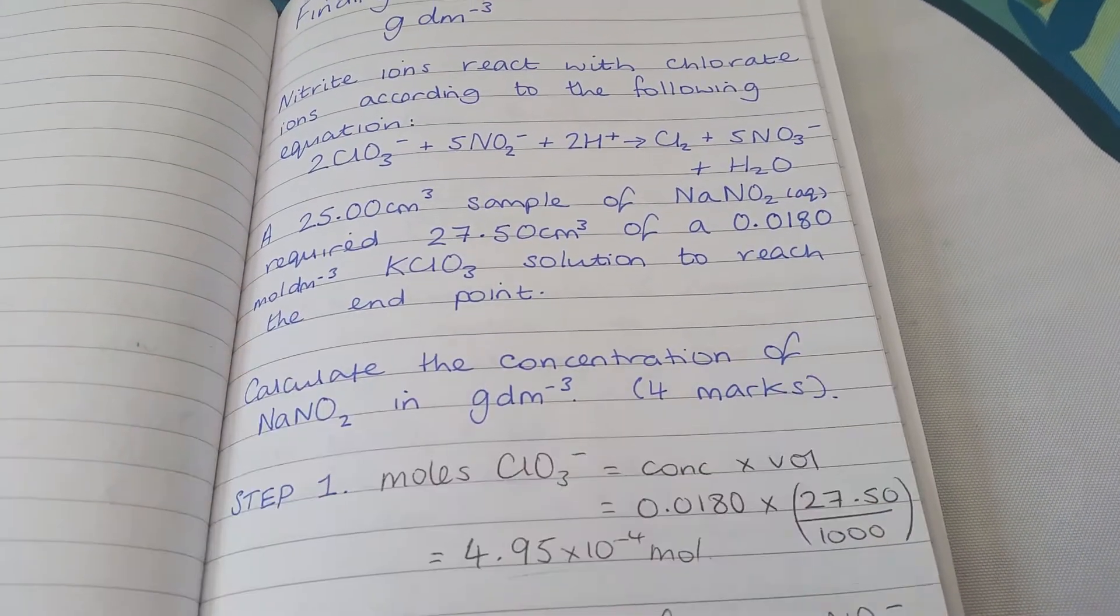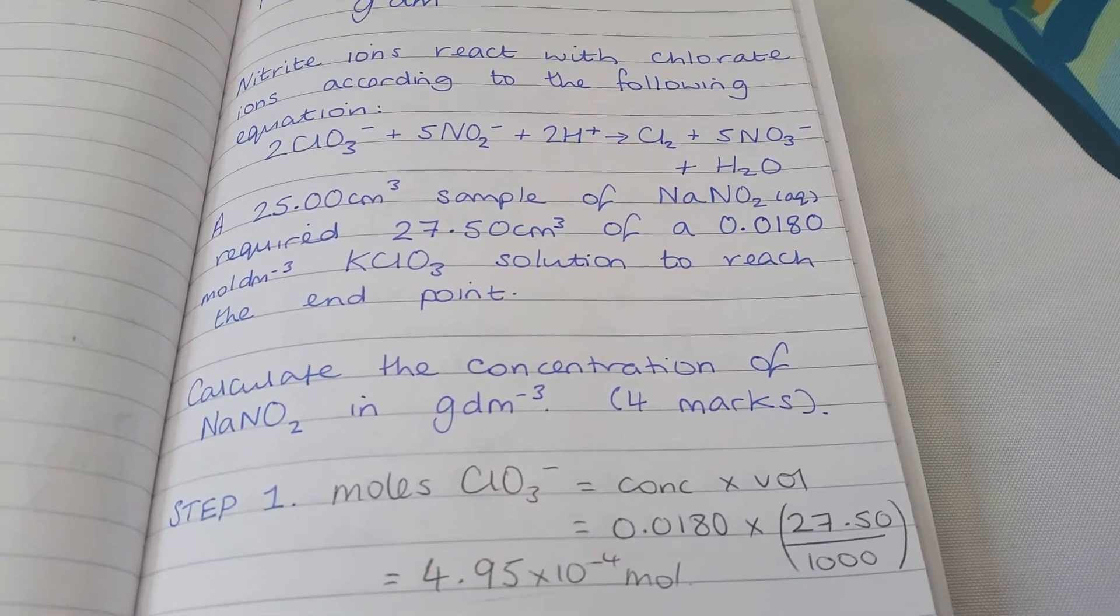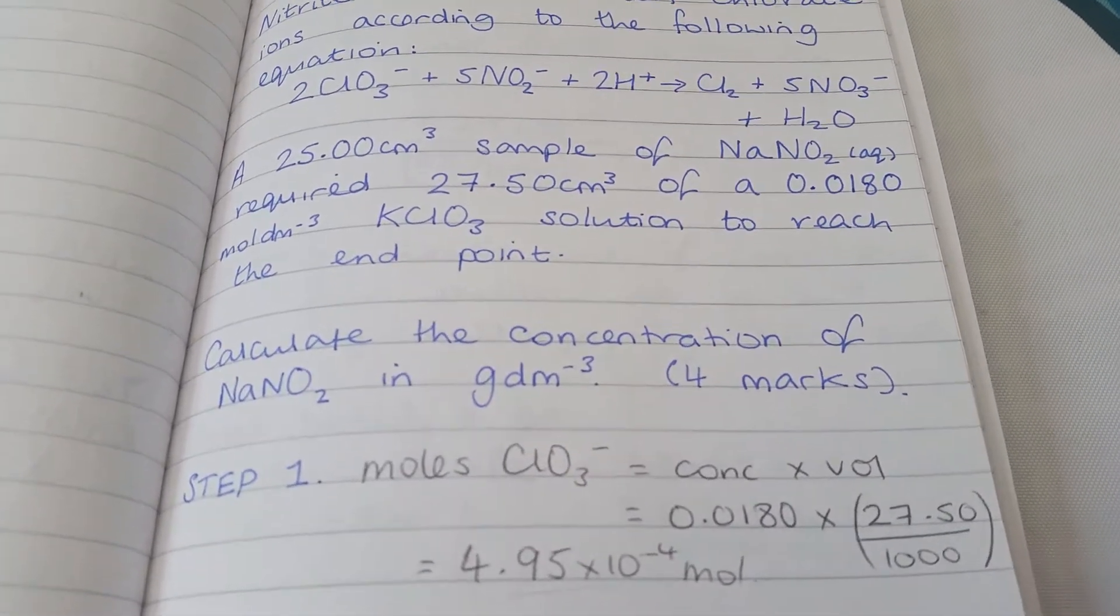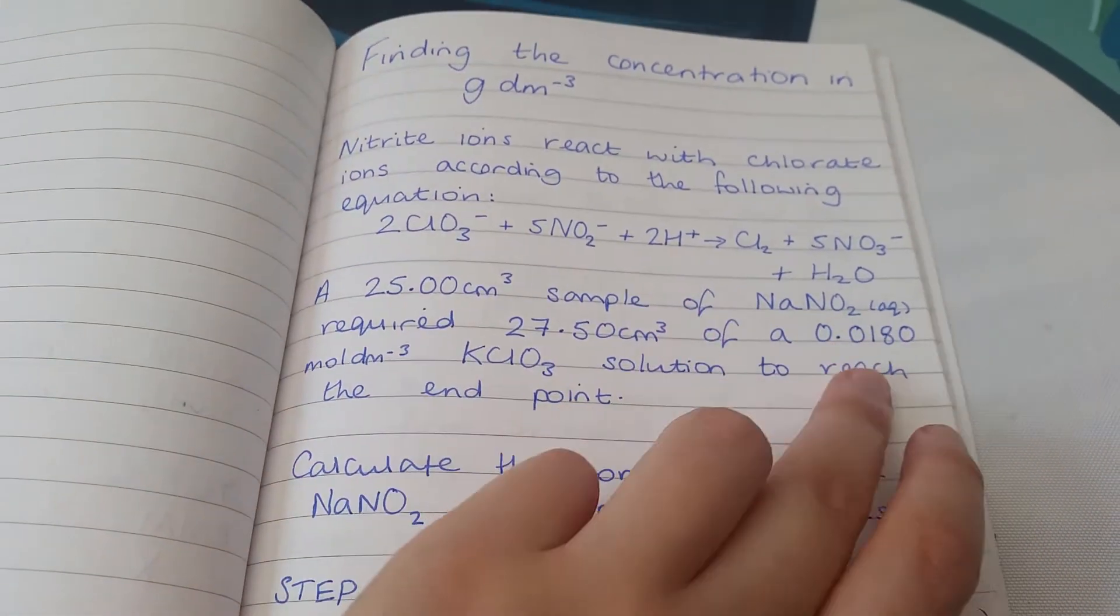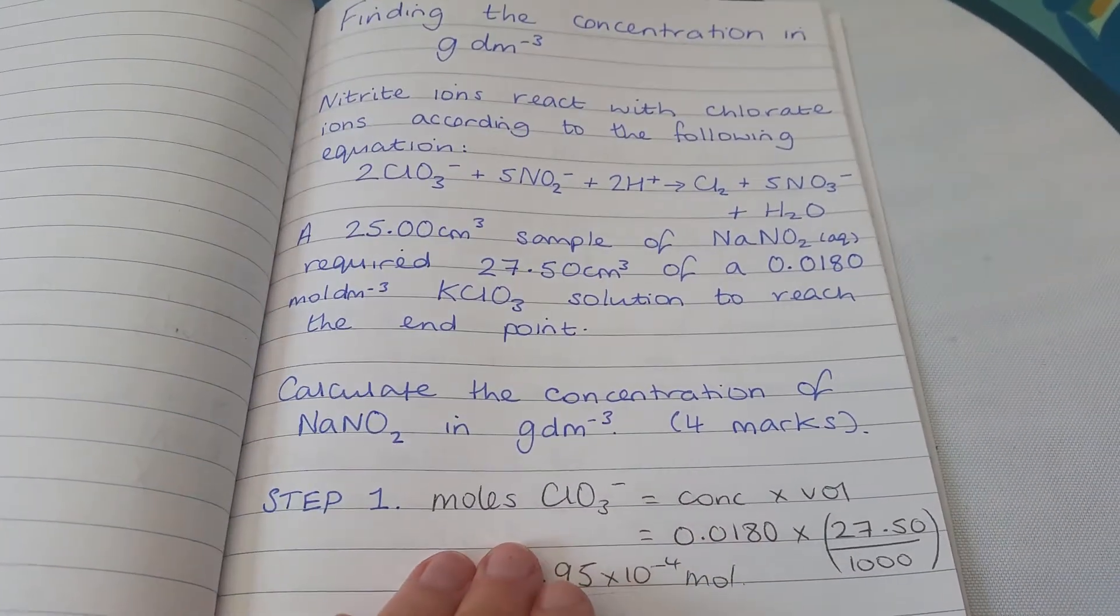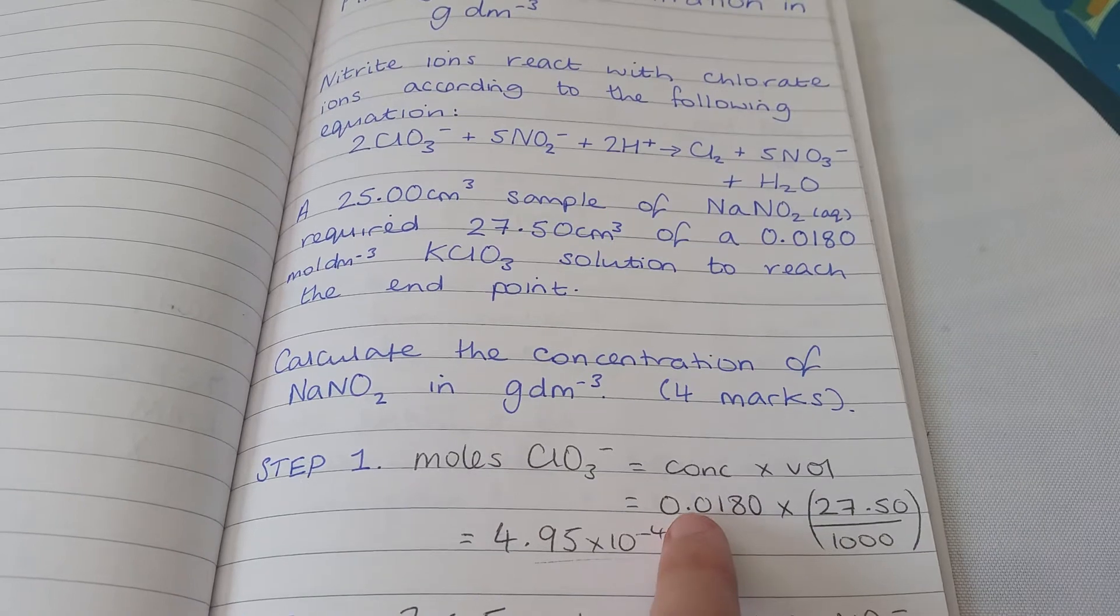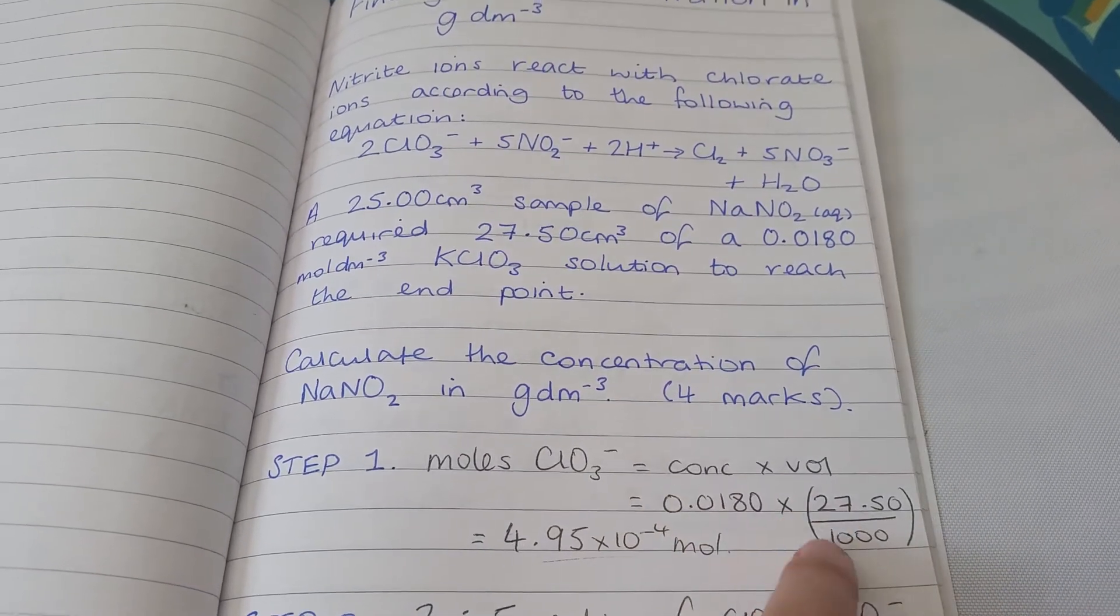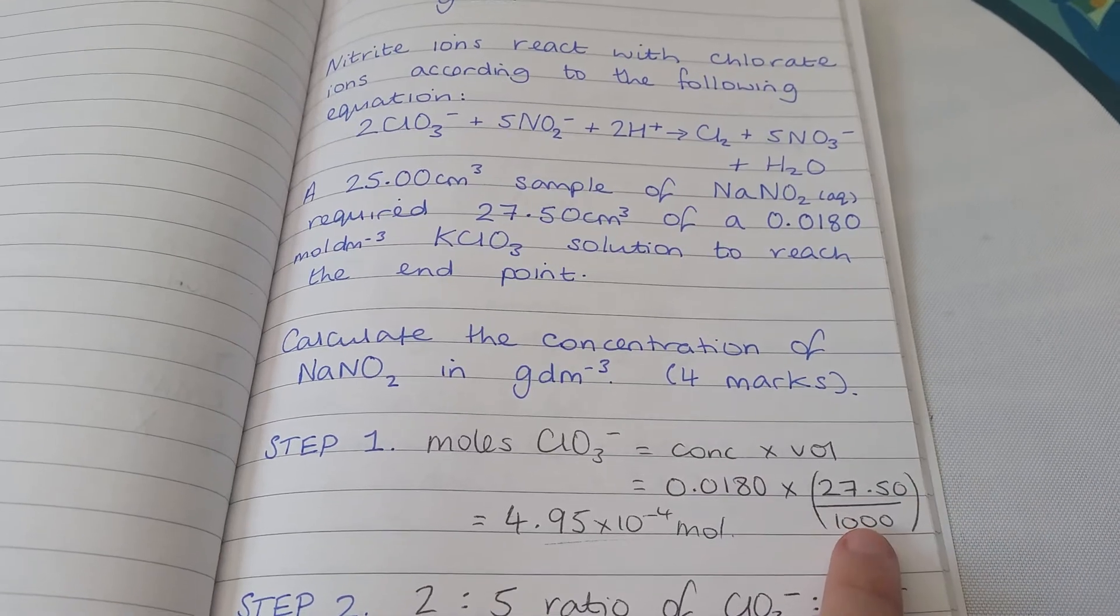We're given our balanced equation already, so we don't need to write one. The next step is to calculate moles of something. We have a volume and a concentration for the potassium chlorate, so we calculate the moles of the chlorate by multiplying concentration by volume, remembering to divide our volume by 1000 to get it into dm³.